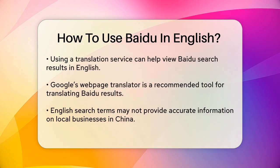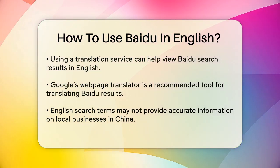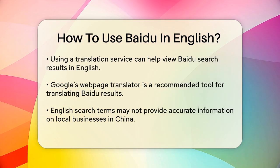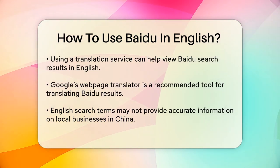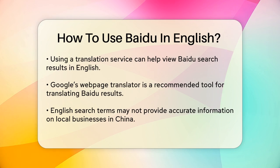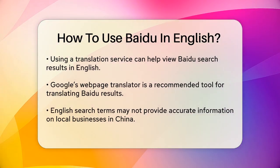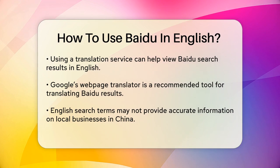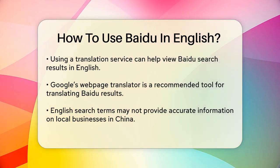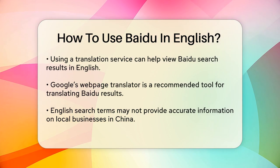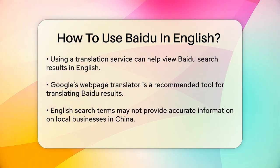If you try searching in English, you'll likely get a mix of Chinese and English results, but they may not be as relevant as you'd hope. To get the most out of Baidu in English, you might want to use a translation service. There are websites that translate Baidu search results from Chinese to English, such as one that uses Google's web page translator. This way, you can see the results in English, but keep in mind that the translation might not be perfect.